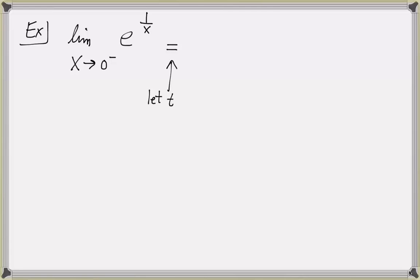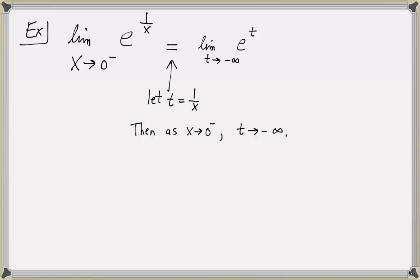Let t equal 1 over x. As x approaches 0 from the left, 1 over x is going to get closer and closer to negative infinity, so t is approaching negative infinity. When I rewrite this limit in terms of t, it equals the limit as t approaches negative infinity of e to the t. We just evaluated this limit — e raised to a very large negative exponent gets closer and closer to 0.